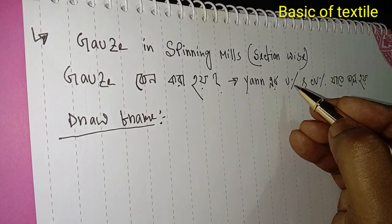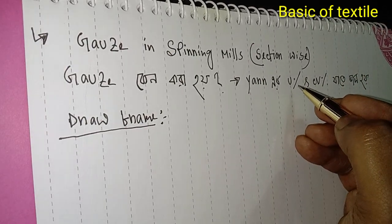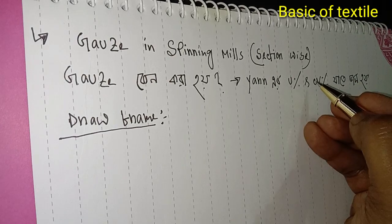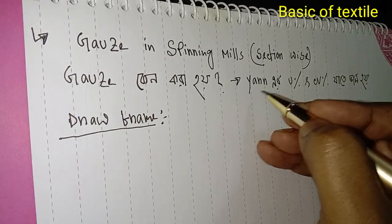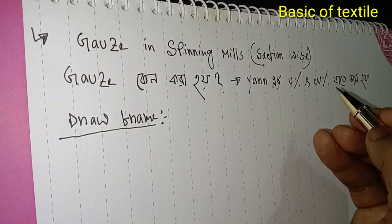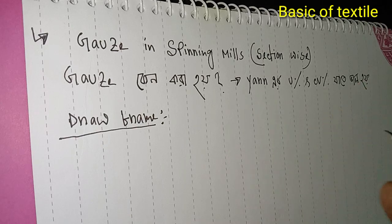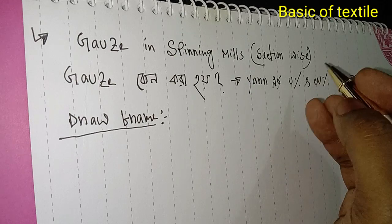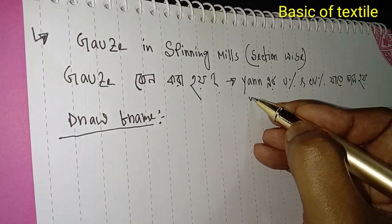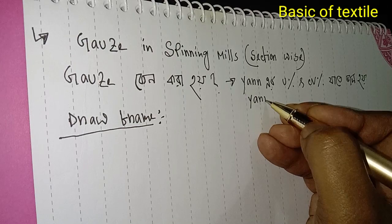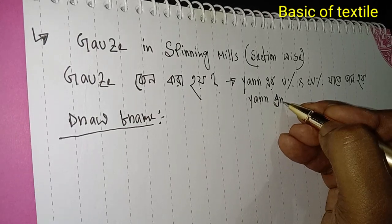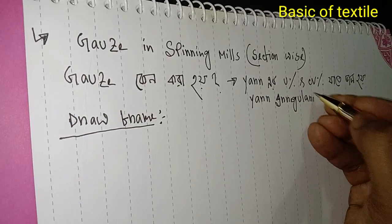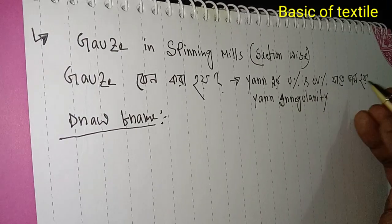BOL TAMBRA JETA BOOT, variation in the process - think about it. The irregularity and regularity of the yarn. Irregularity is a common or general issue in yarn production.